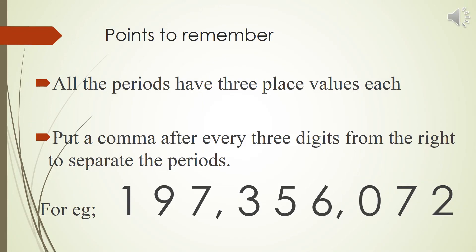These are the points we should remember when writing a number name in the international system of numeration. All periods have three place values each, so to write a number using commas, we put a comma after every three digits from the right side. For example, in this number we have put a comma before 0, then 653, then comma, then 791.